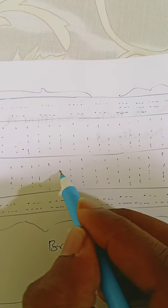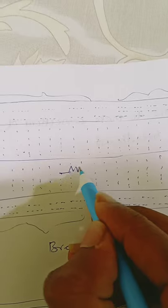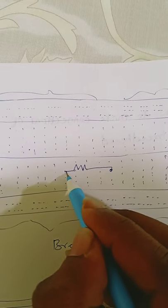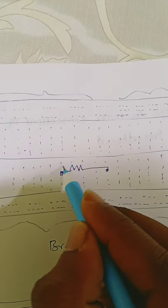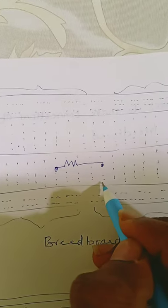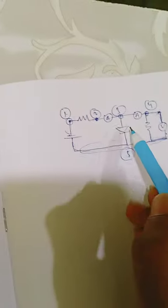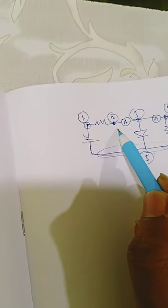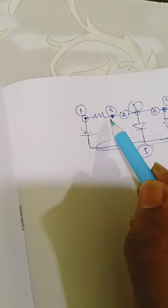I will now construct this circuit on the breadboard. Nodes 1 and 2 are different potentials, so I will choose 2 different potential lines here. This is one potential line and this is the other. An ammeter is connected to this line — the other side of the resistor and the other side of the ammeter are at the same potential.